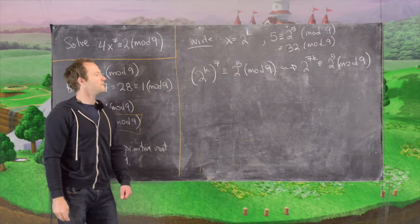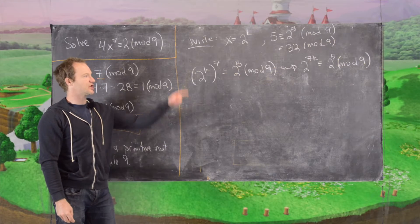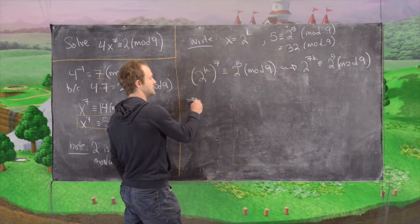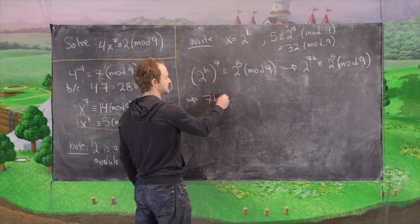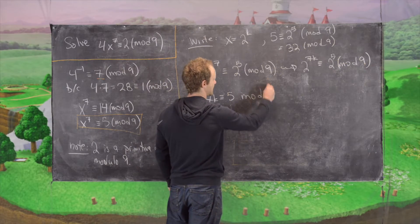And now when we bring these out of the exponent we change our modulus to phi of 9 which is 6. So that tells us that 7k is congruent to 5 mod 6.